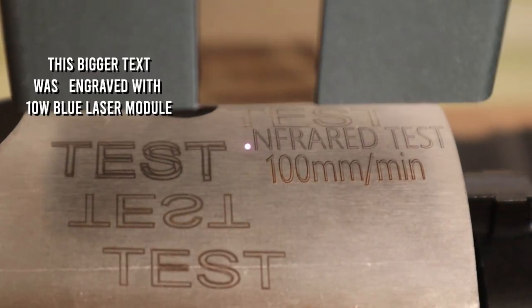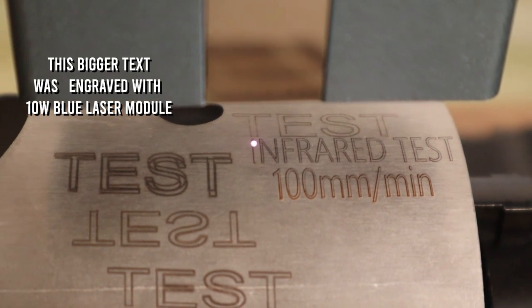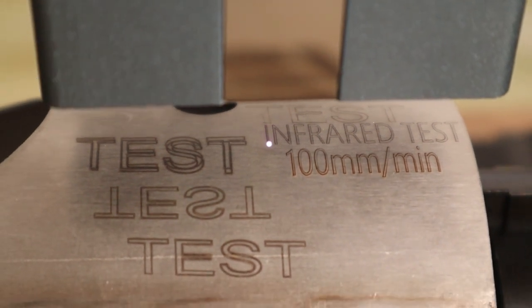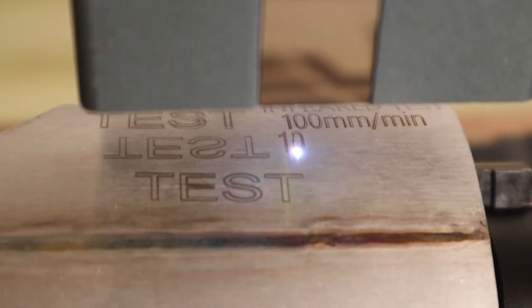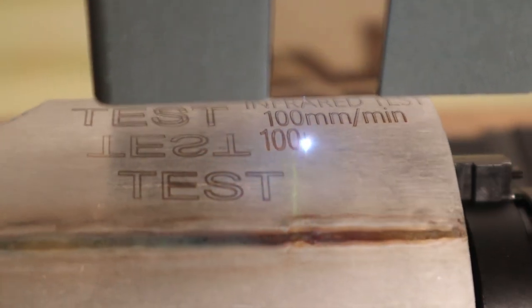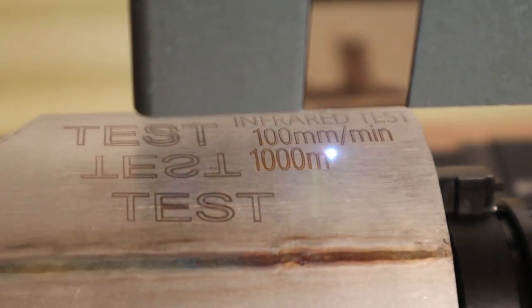Stainless steel is the only raw metal that can be directly engraved with a blue laser module of sufficient power, usually from 10 watts upwards with some good exceptions like the Sculpfun S9. I tried to engrave some sample text at two different speeds.